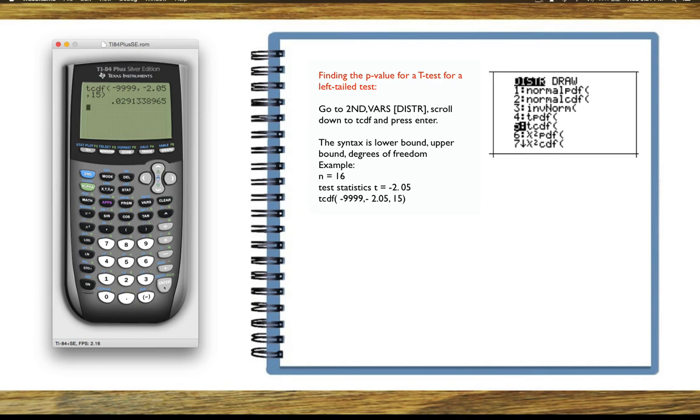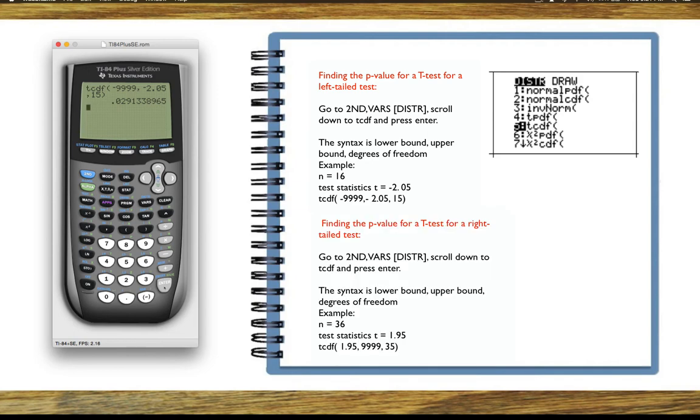Make sure you're considering rounding rules. Now our second case is a right tail test where the alternative hypothesis, for example, is that the mean is greater than some number. The test statistic now is 1.95 with a sample size of 36.